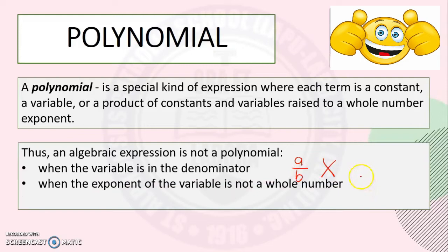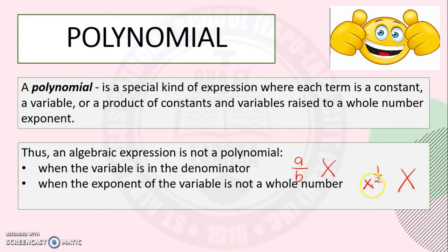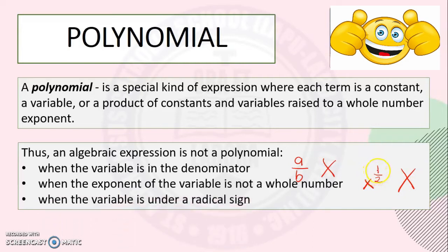Next, an expression is not a polynomial when the exponent of the variable is not a whole number. All polynomials have whole number exponents. For example, x exponent one-half is not a polynomial because the exponent is a fraction, and fractions are not whole numbers. Next, when the variable is under a radical sign — for example, square root of x — that expression is not a polynomial.